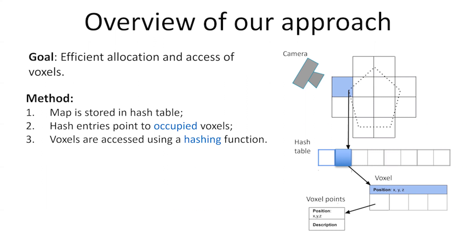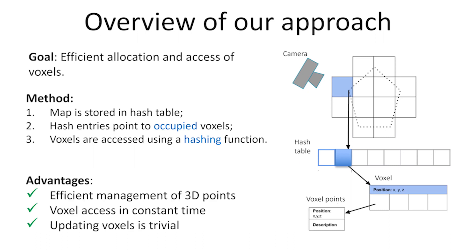The goal of voxel hashing is to manage 3D points efficiently and in constant time, regardless of the map size. Since voxels are containers for 3D points, modifying the information in the voxel map is trivial.